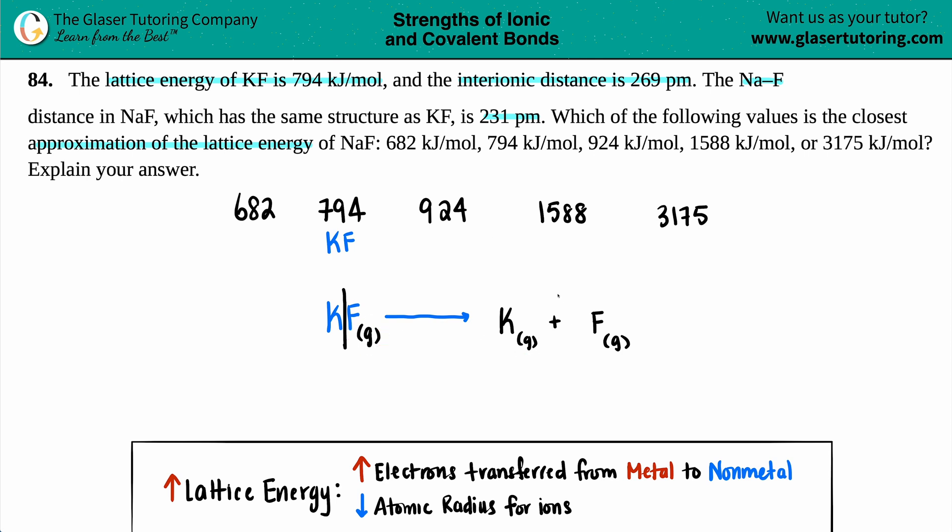And the last thing we got to do here is just put the charges for potassium and fluorine. Potassium is in group 1, so that's a plus 1 charge. And fluorine is a halogen, group 7, 7A, 17, depending on what your periodic table says, and that's a negative 1.